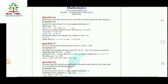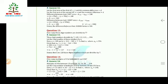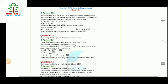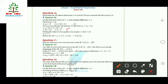Question 16: Determine the AP whose 3rd term is 16 and whose 7th term exceeds the 5th term by 12. Let first term be a and common difference be d. Then a + 2d = 16. Also a + 6d = a + 4d + 12, which simplifies to 2d = 12, so d = 6. Substituting d = 6 into the first equation gives a = 4. So the AP is 4, 10, 16, ...